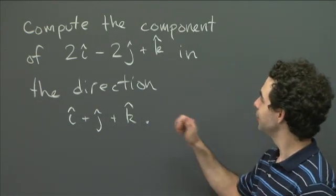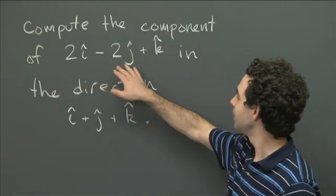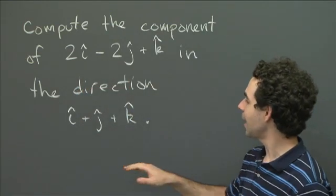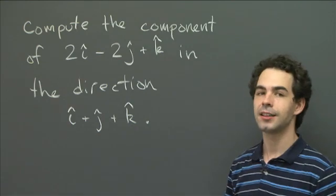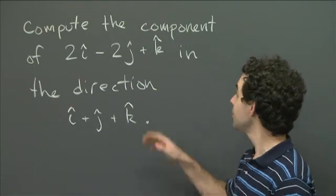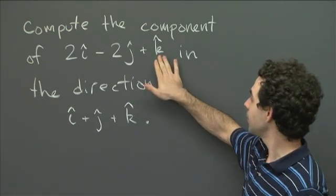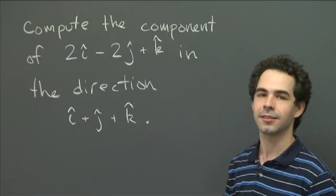So we've got two vectors, the vector 2i minus 2j plus k, and we've got the vector i plus j plus k. And so what I'd like you to do for me is to compute the component of this first vector in the direction of this second vector.